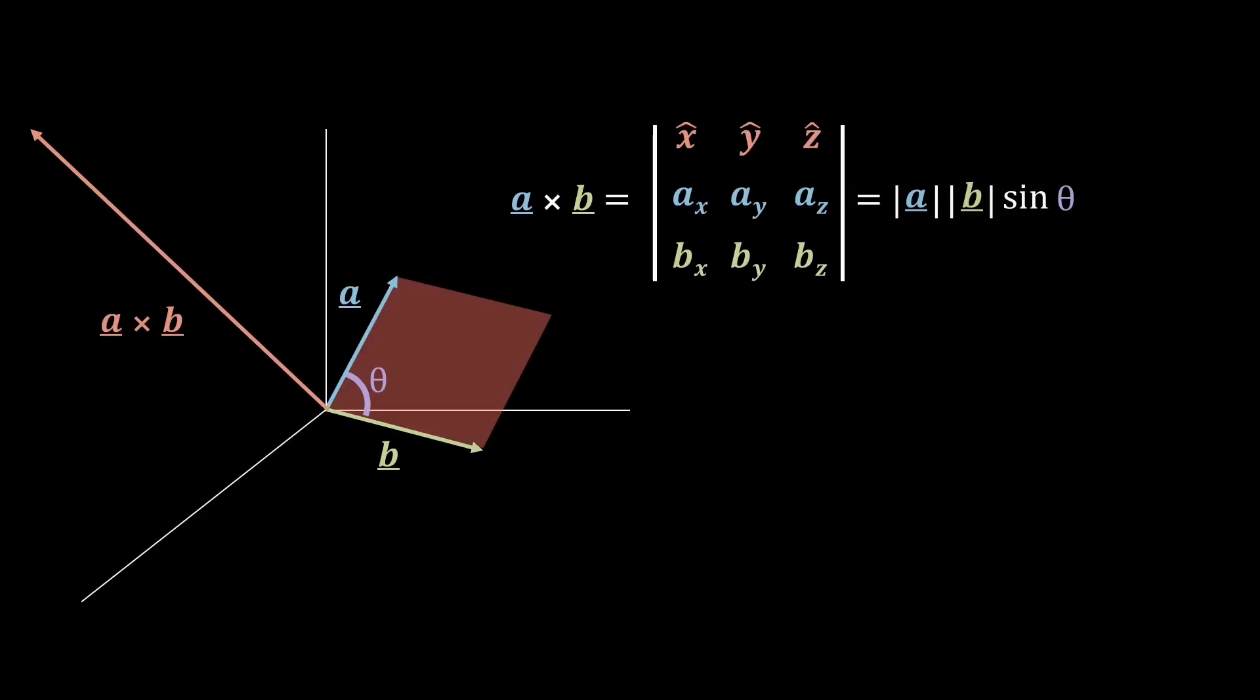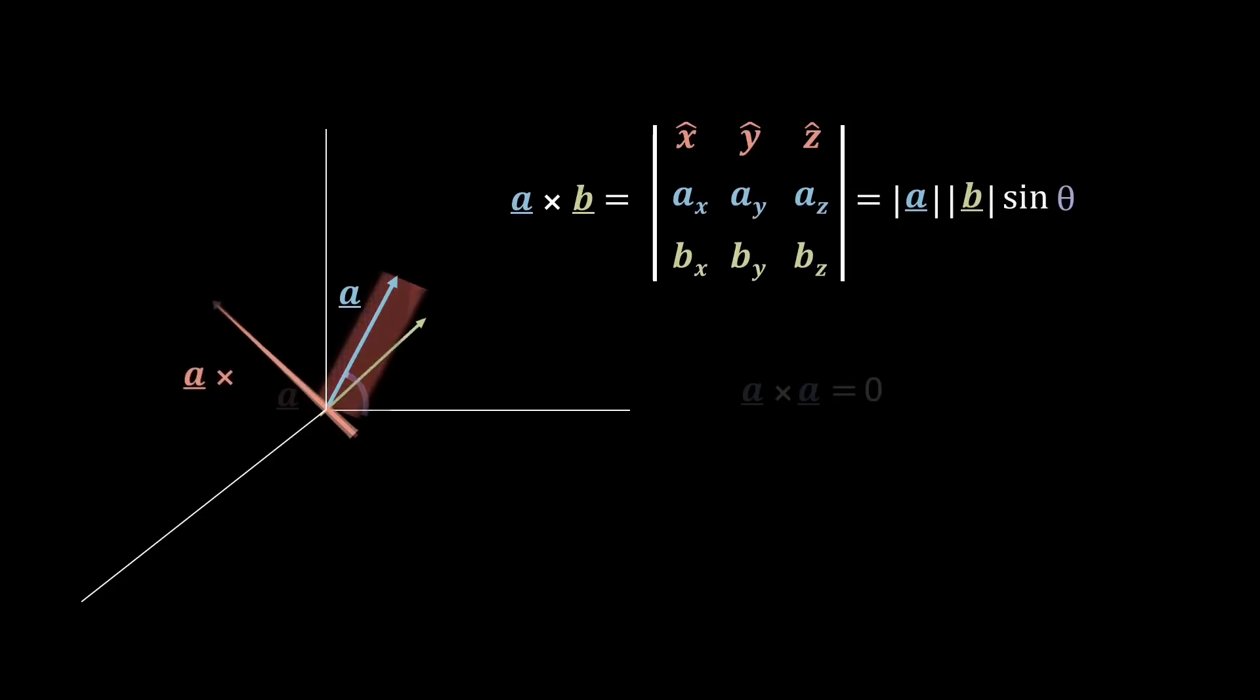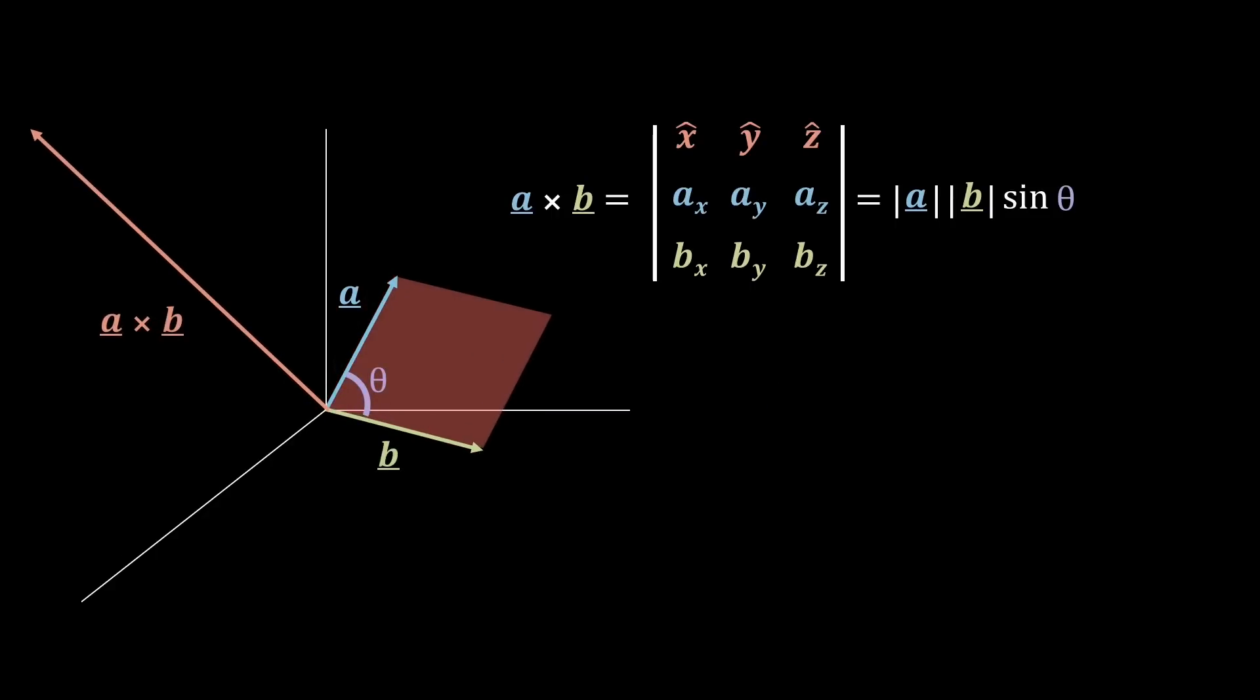If the two vectors are parallel, then this forces the sine term to be zero, which is clear to see, as the parallelogram would have zero area anyway. The most simple case being the vector a cross producted with itself.